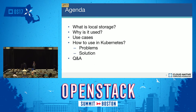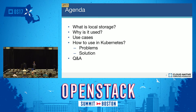First I'm going to talk about what local storage is in Kubernetes and why people would want to use it. I'll go over some use case examples, then the mechanisms and how you'd use local storage in Kubernetes, the current problems with the current solution, and then a new feature we're working on to solve all of these issues. At the end, there will be time for questions.